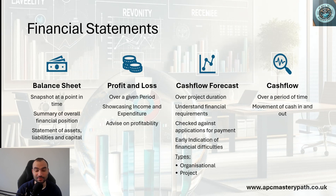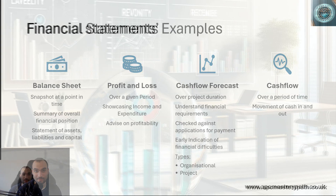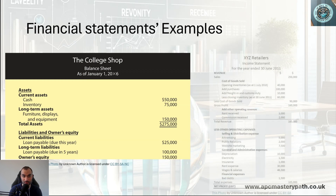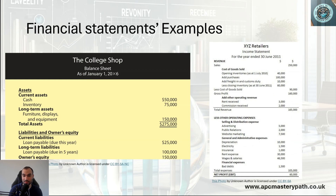Looking at some financial statement examples: the balance sheet, as you can see on screen, lists current assets, long-term assets, short-term liabilities, and long-term liabilities. In this example, total assets are $275,000, total liabilities are $125,000, and deducting liabilities from assets gives an owner's equity of $150,000. The income statement lists the cost of goods sold, revenue from goods, gross profit, expenses, and at the bottom shows the profit or loss the business achieves. The cash flow example lists expenses and financial commitments for different areas over a number of months.